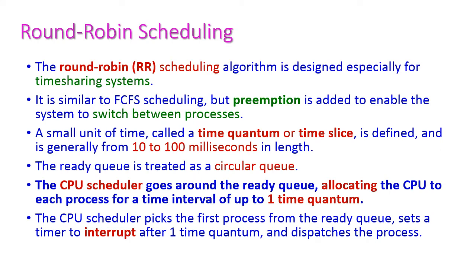The round robin scheduling algorithm is designed especially for time sharing systems. It is very similar to the first come first serve scheduling algorithm, but preemption is introduced in this round robin algorithm to enable switching between processes.